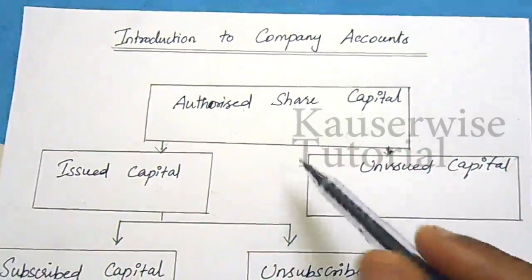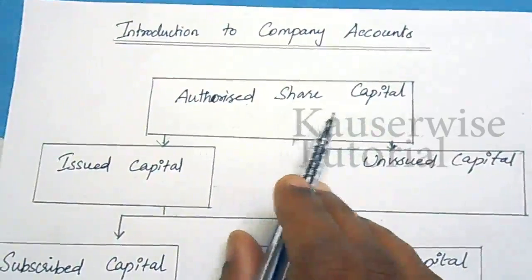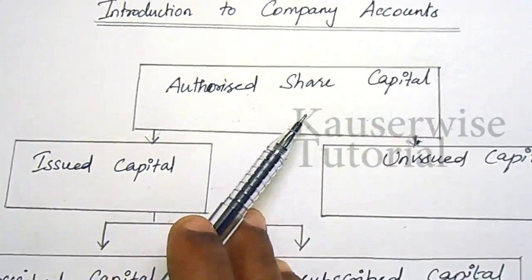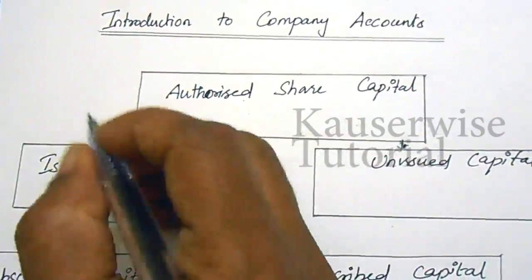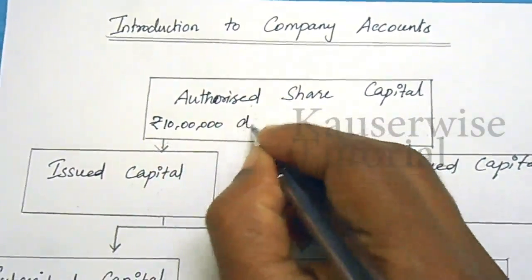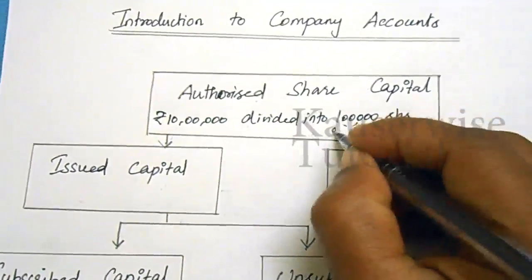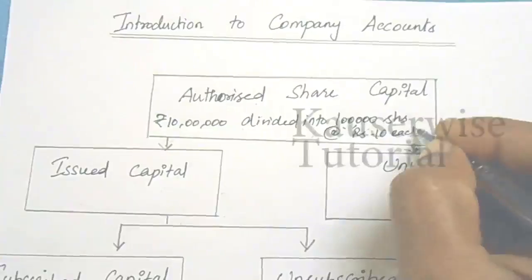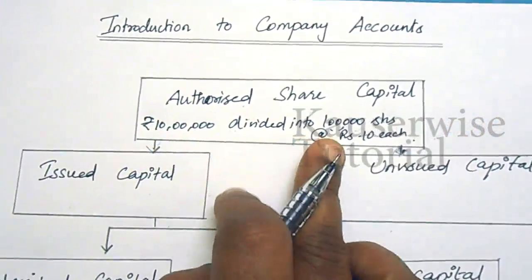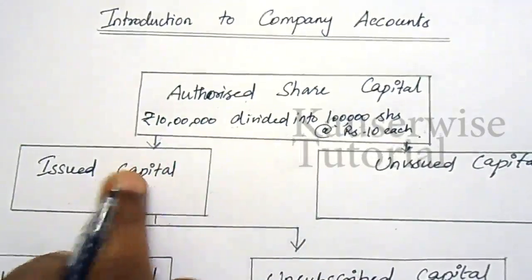The first term is authorized share capital, which means the maximum amount of capital a company is authorized to raise from the public. It can also be called registered capital. For example, a company can raise 10 lakh rupees as capital divided into 1 lakh shares at rupees 10 each. This is called authorized or registered share capital. Under authorized share capital there are two divisions: issued capital and unissued capital.